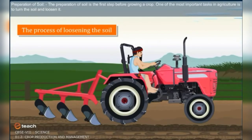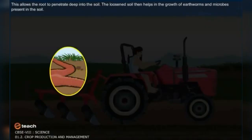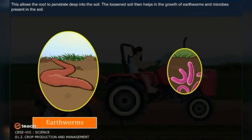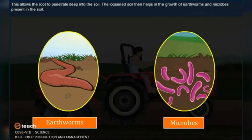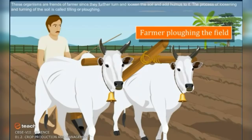Preparation of soil is the first step before growing a crop. One of the most important tasks in agriculture is to turn the soil and loosen it. This allows the roots to penetrate deep into the soil. The loosened soil helps in the growth of earthworms and microbes present in the soil. These organisms are friends of the farmer, since they further turn and loosen the soil and add humus to it. The process of loosening and turning of the soil is called tilling or ploughing.